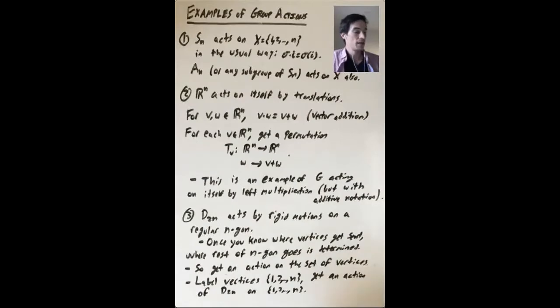One more example. D2n, the set of symmetries of a regular n-gon, acts by rigid motions on a regular n-gon. So we said in our first discussion of dihedral groups, you take your n-gon, you can pick it up, move it around in space, and then put it back down in a way that sends vertices to vertices. And the n-gon gets sent to the whole n-gon.